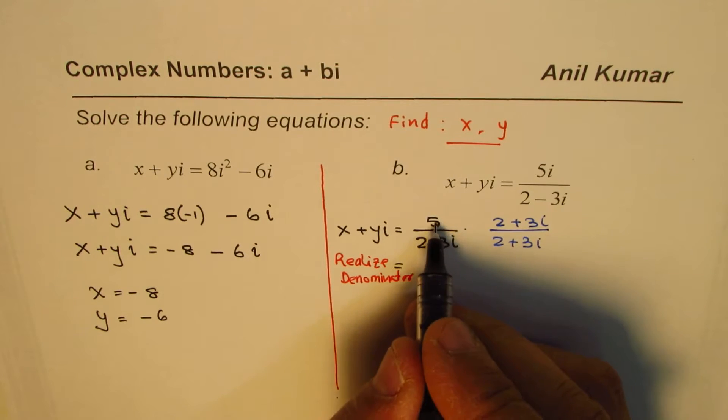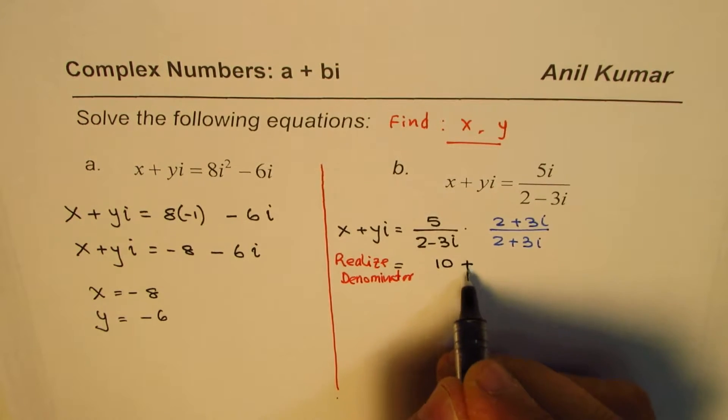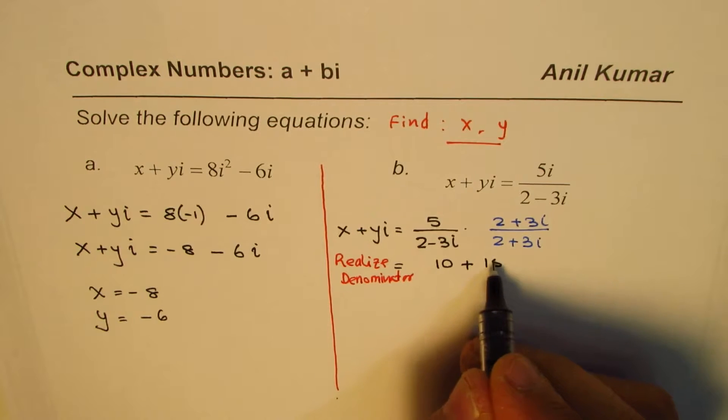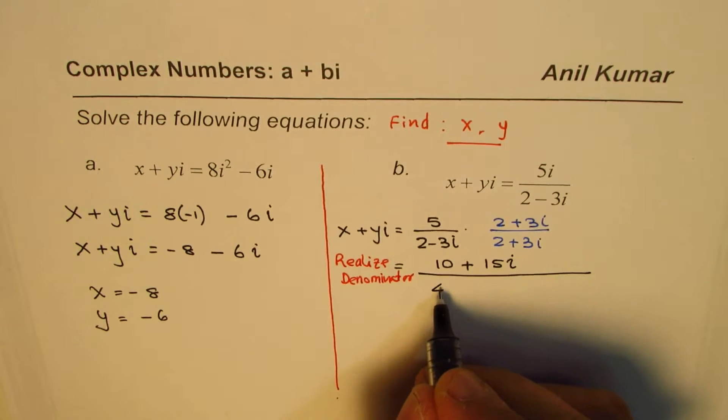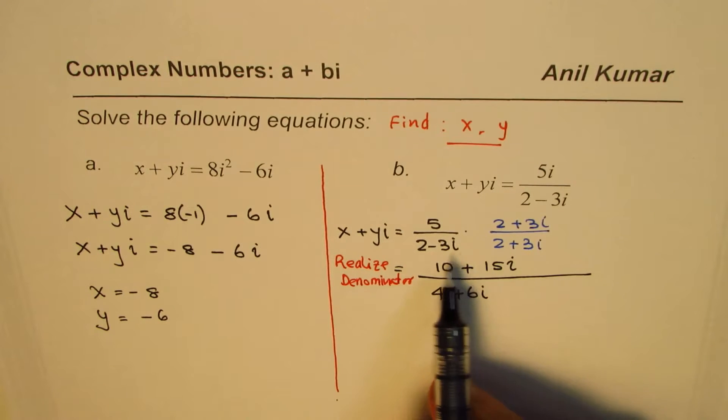So this could be written as 5 times 2 is 10 plus 5 times 3 is 15i in the numerator. And the denominator, 2 times 2 is 4, 2 times 3i plus 6i. Some of you can use the formula.